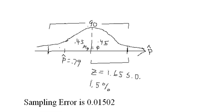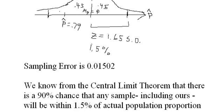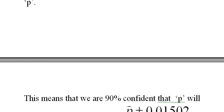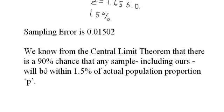Now, we can turn the tables on this. We know from the central limit theorem that there's a 90% chance that any sample, including ours, will be within 1.5% of the actual population proportion.